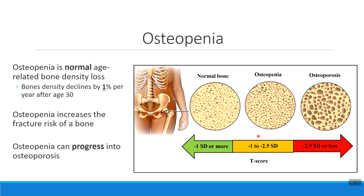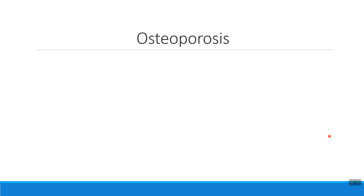Osteopenia happens in everyone — this is normal with aging. If osteopenia becomes severe, we would start to call it osteoporosis.